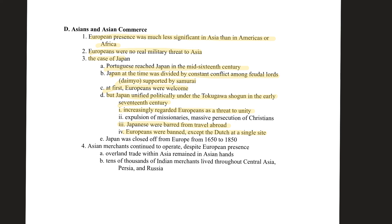Eventually Japan was closed off from Europe from 1650 to 1850, with only the Dutch maintaining a limited trading presence. The growth of the West would ultimately force the Japanese to change. Overall, Asian merchants continued to operate despite European presence — it was largely business as usual. Overland trade within Asia remained in Asian hands, and the Asian merchants and traders continued to do what they always had done, with just a somewhat greater European presence.